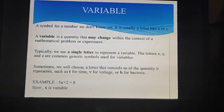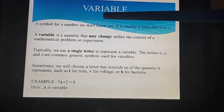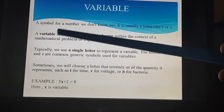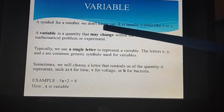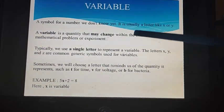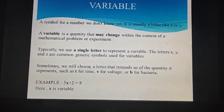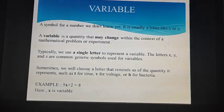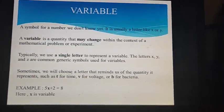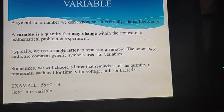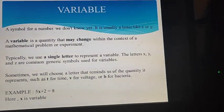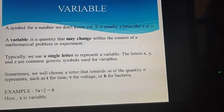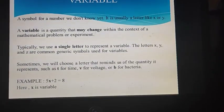First, let us see what are variables. Variable, as the name indicates, varies. A symbol for a number we don't know yet, it is usually a letter like x or y. Variables are letters which represent values we don't know exactly, expressed by letters like x, y, a, b, etc.